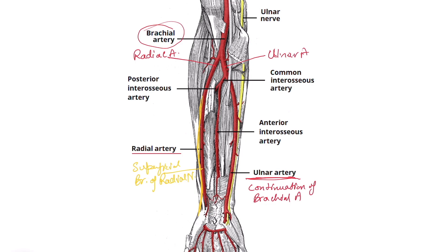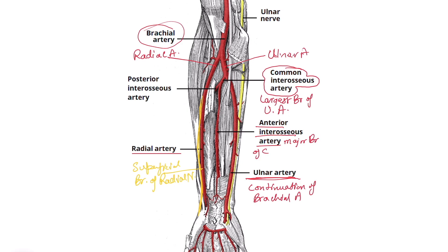Ulnar artery gives its largest branch in the forearm — the common interosseous artery. Although it is very small in length, at the upper border of the interosseous membrane, the common interosseous artery soon divides into its two terminal branches. The same principle applies: anterior interosseous artery is the major branch of common interosseous artery, while posterior interosseous artery is the minor branch.